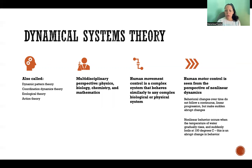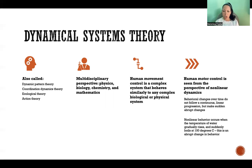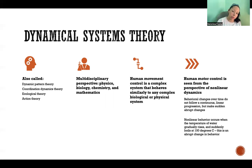We go from a state of not boiling — the water is just on the stove and not boiling yet, but the temperature is gradually increasing — and then suddenly we cross a threshold in temperature and it abruptly changes in behavior from a state of not boiling to a state of boiling. That's an example of non-linear behavior where behavior does not follow a continuous linear progression; instead there's a sudden abrupt change.